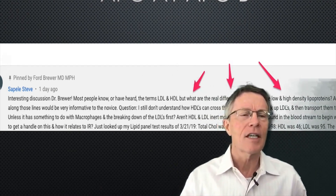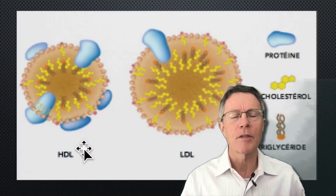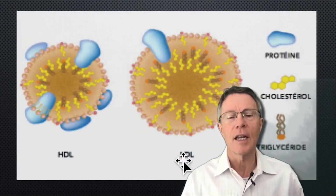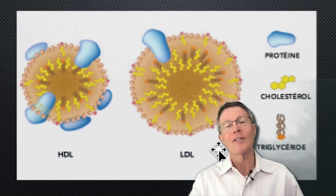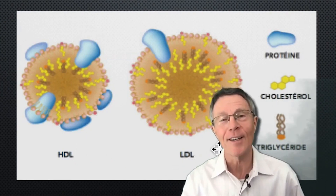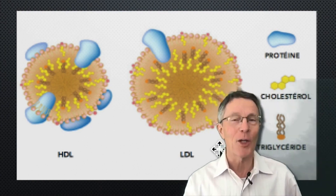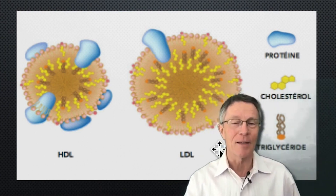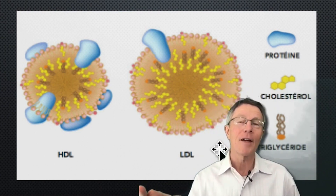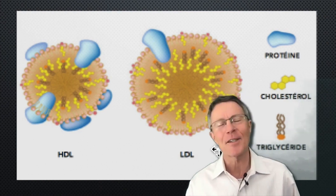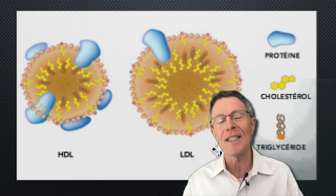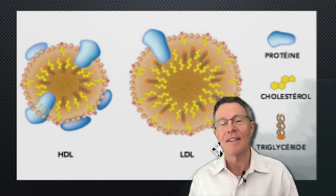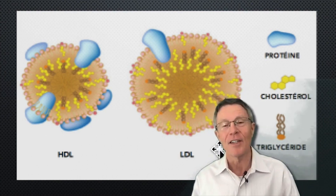HDL stands for high-density lipoprotein. Why is it higher density than LDL, which is low-density lipoprotein, and certainly higher density than VLDL, which is very low-density lipoprotein? By the way, IDL is intermediate-density lipoprotein — its density is between LDL and VLDL.